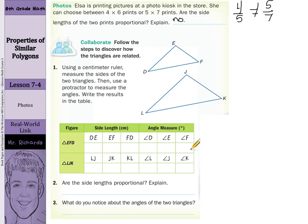In our collaborate here, follow the steps to discover how the triangles are related. Using a centimeter ruler, measure the sides of the two triangles, then use a protractor to measure the angles. Write the results in the table. I did some of the measuring for us here. So DE is 2.7 centimeters, EF is 2 centimeters, FD I measured at 3.6 centimeters. LJ I measured at 4.1.